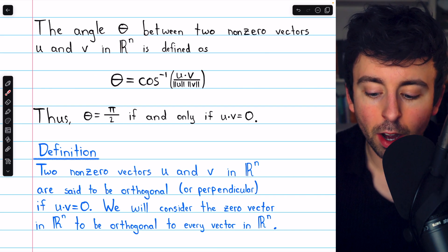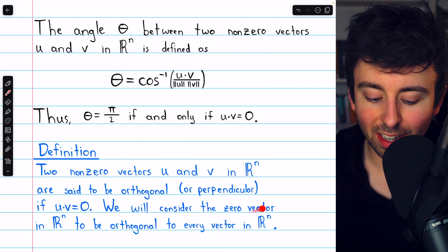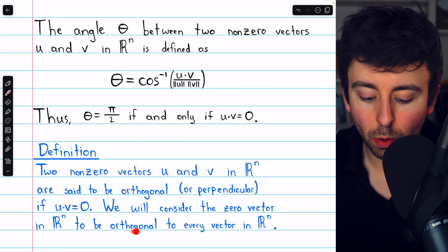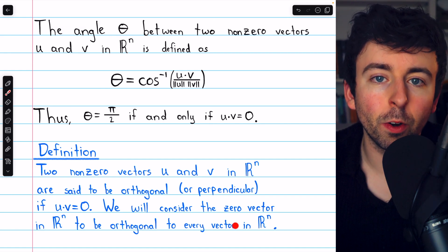Now this argument did not apply to zero vectors. We will consider the zero vector in Rn to be orthogonal to every vector in Rn.